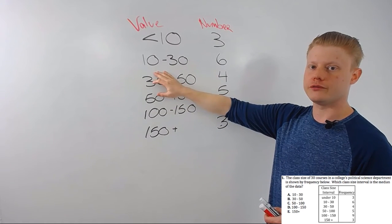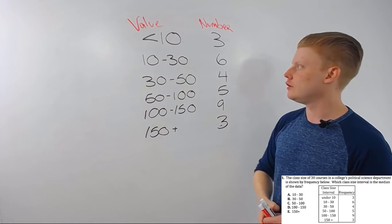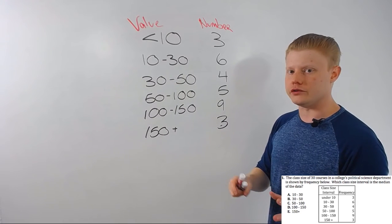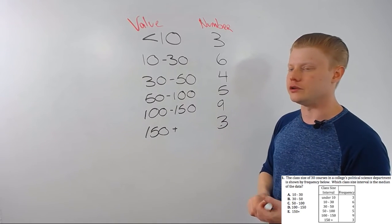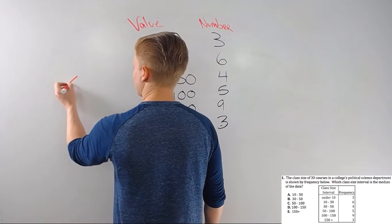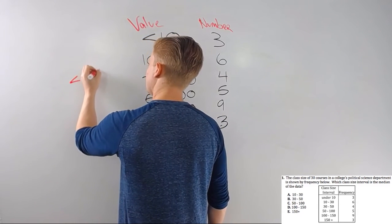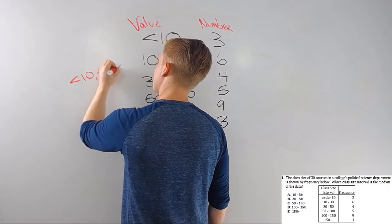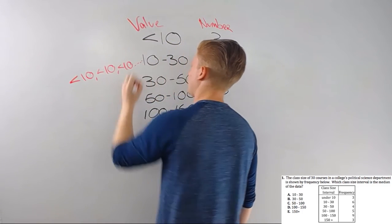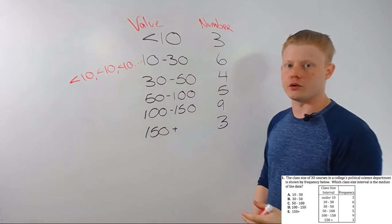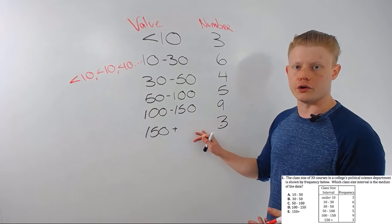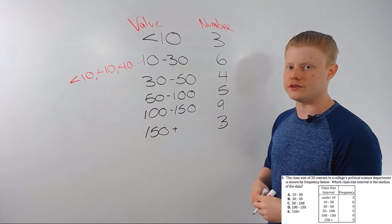So to do that - and I wouldn't do it this way, I'll show you the way I would normally do it - you would say, well, I've got three under tens, and then all the way until you get to that middle value. By the way, since there are 30 of these, we're looking for the average of the 15th and 16th.